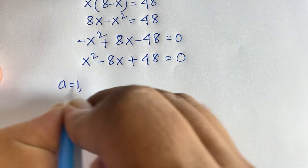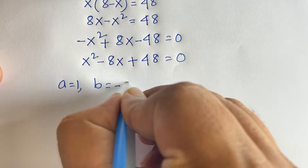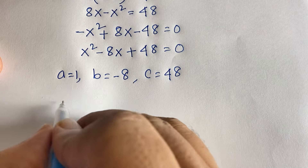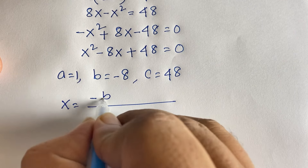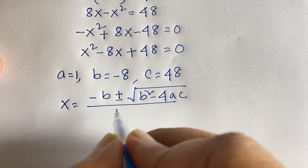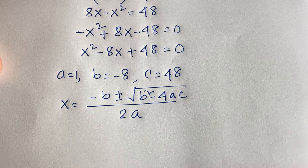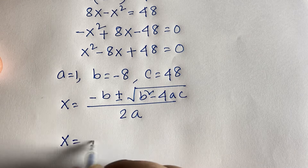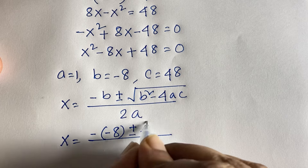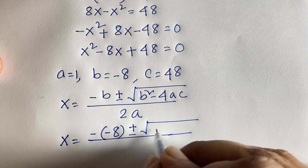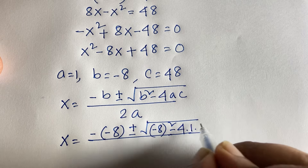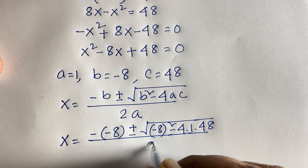Now we'll find the value of x using the quadratic formula. Here a equals 1, b equals minus 8, and c equals 48. So x equals minus b plus or minus square root of b squared minus 4ac, all over 2a.